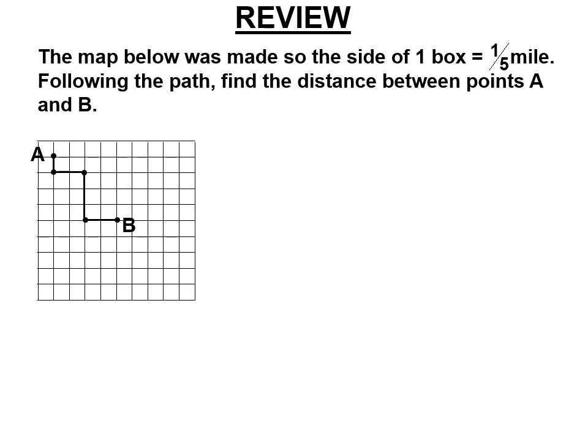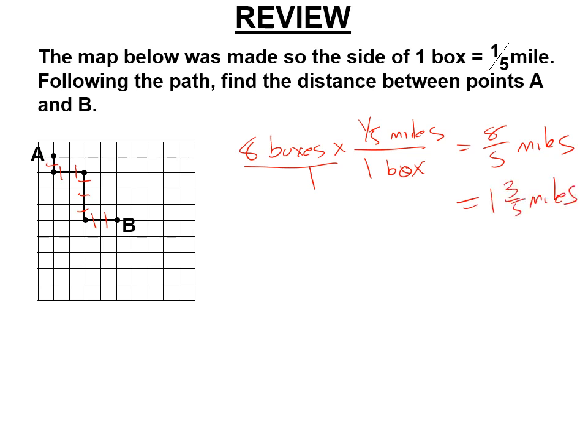We're going to find out how long this path is. So we have to count it. 1, 2, 3, 4, 5, 6, 7, 8. It is 8 boxes long. And 1 box is 1 fifth of a mile. So this is 8. We multiply across. It's 8 times 1 fifth. 8 times 1 fifth is 8 fifths. It's 8 fifths miles. Also known as 1 and 3 fifths miles between A and B.